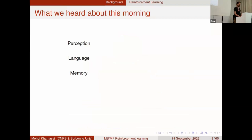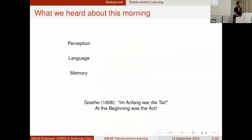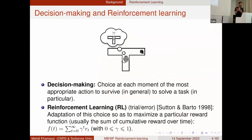This morning we heard about different cognitive functions — perception, language, memory — but as Goethe wrote, 'In the beginning was the act.' The action is the starting point. In this presentation we'll focus on the decision-making process for action. If you have an animal in a maze that wants to get some food, decision making is the choice at each moment of the most appropriate action, with a general survival objective in mind.